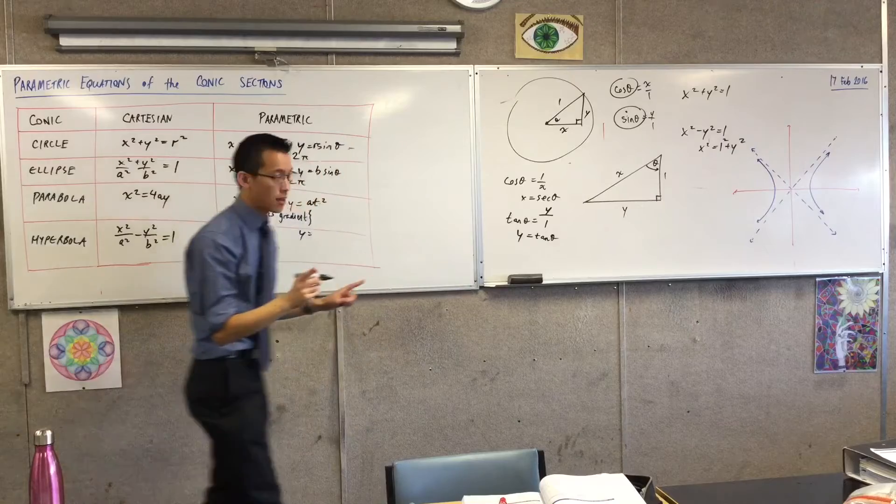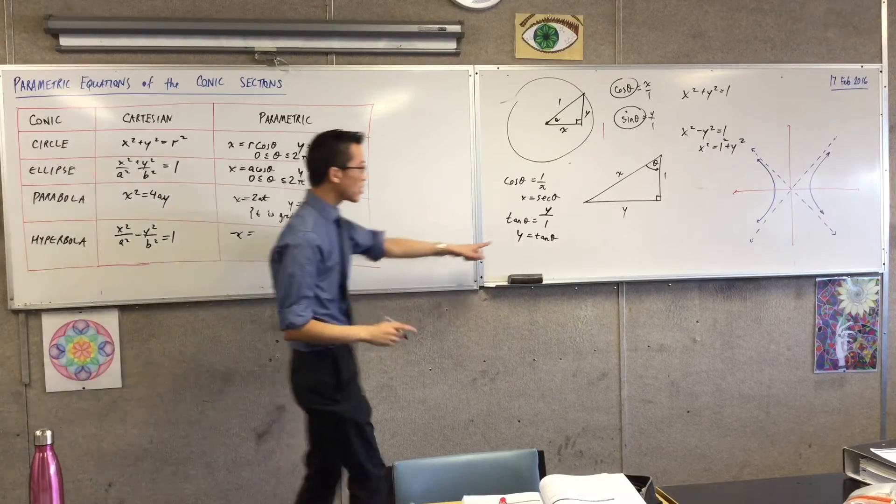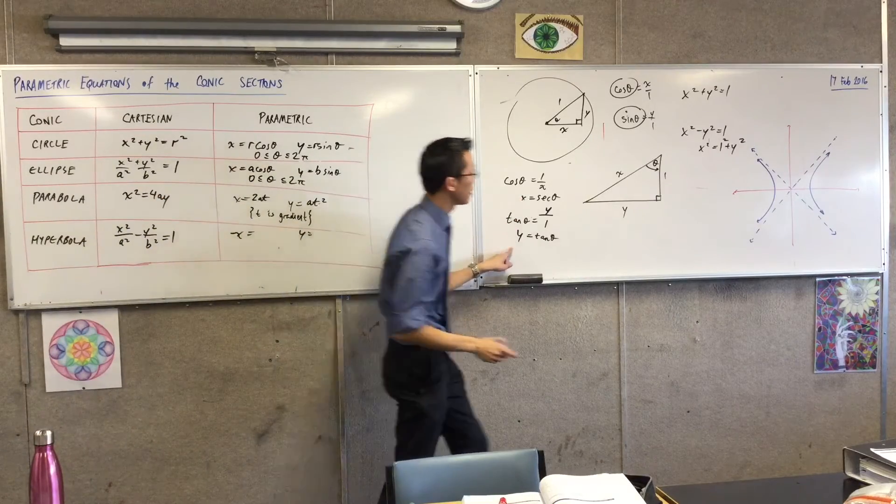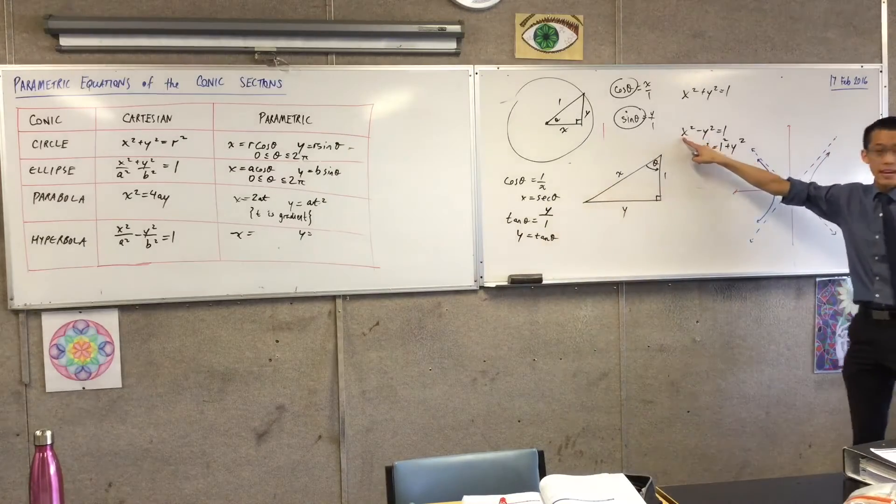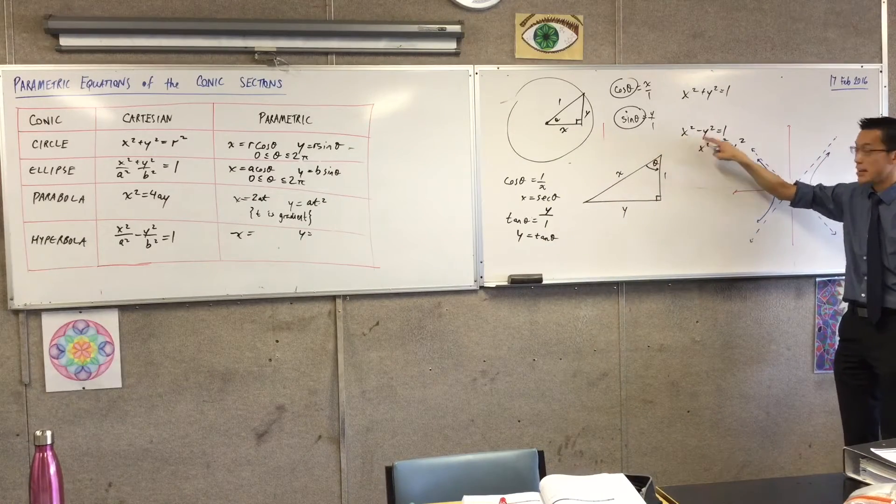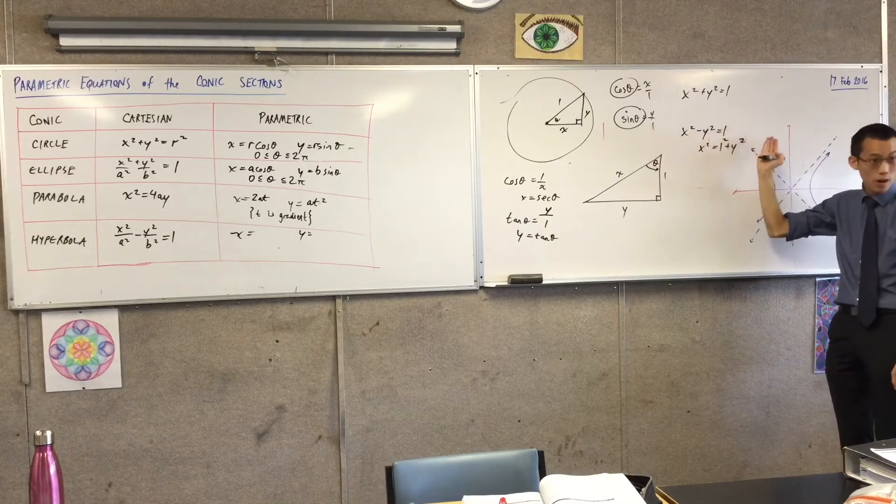Does this make sense? Now you have a look at this. Is this going to check out sec theta and tan theta? Is it going to check out here? And the answer is absolutely, because sec squared minus tan squared is equal to 1. Brilliant.